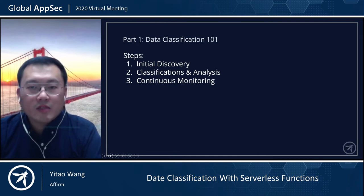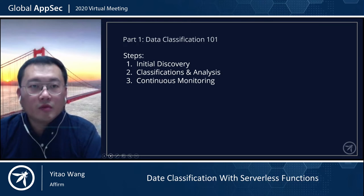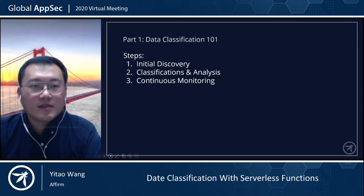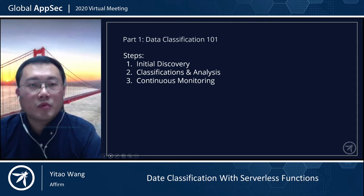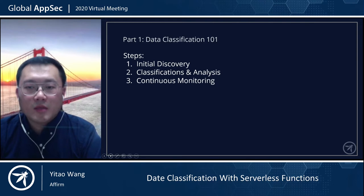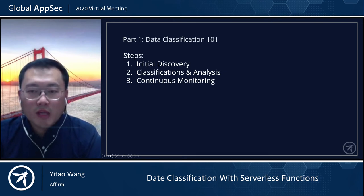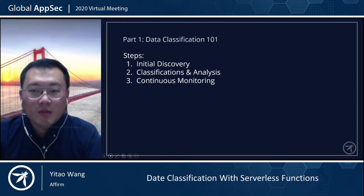Typically data classification needs to be done in the following three steps. First, you want to scan the data storage and do an initial discovery to identify what you have stored — the data inventory should be generated after this step. Second, once you have the inventory, you will perform analysis on the data and label it based on predefined classification rules. Third, there should be an ongoing monitoring mechanism to keep track of changes, to understand what's newly added and what's abnormal behavior. Since there are always changes being made, you need to keep iterating steps two and three to keep up with the latest changes.